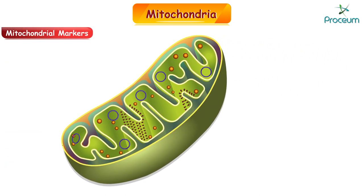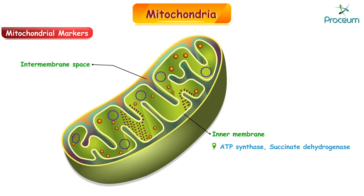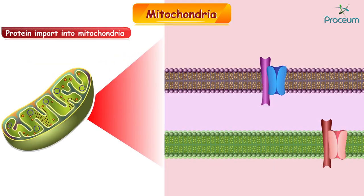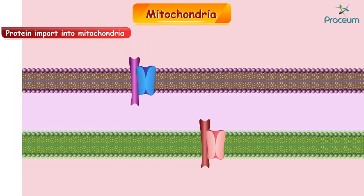Here are some mitochondrial markers. For the inner membrane, the markers are ATP synthase and succinate dehydrogenase. For the intermembrane space, the markers are creatine kinase and adenylate kinase. The matrix markers are glutamate dehydrogenase, pyruvate dehydrogenase, and enzymes of the TCA cycle and oxidation of fatty acids.